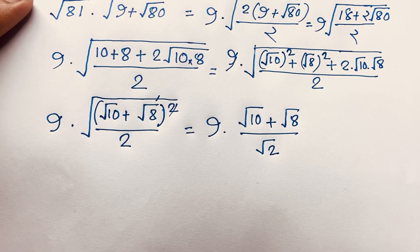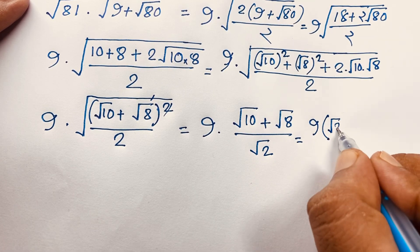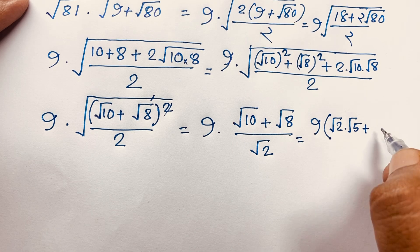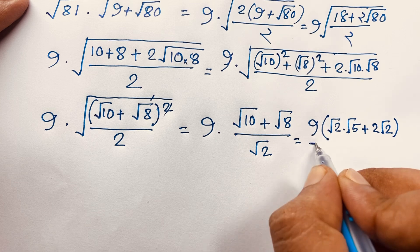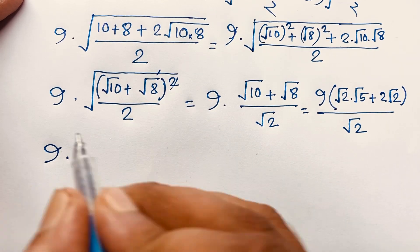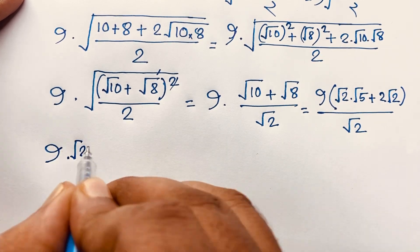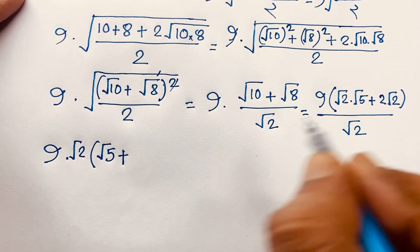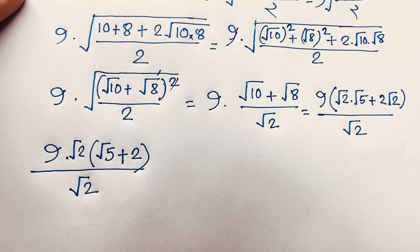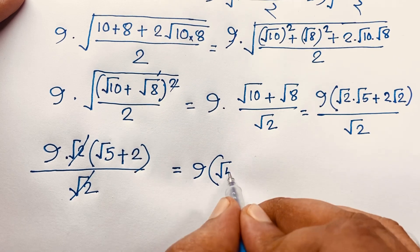Now you can see: square root 10 equals square root 2 times square root 5, because 2 times 5 is 10. And square root 8 equals 2 root 2, because 4 times 2 is 8. So we have 9 times (square root 2 times square root 5 plus 2 root 2), over square root 2. Taking square root 2 as common, it becomes 9 times square root 2 times (square root 5 plus 2), over square root 2. The square root 2 cancels, giving us 9 times (square root 5 plus 2).